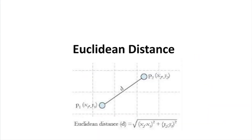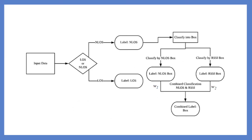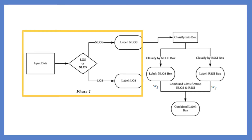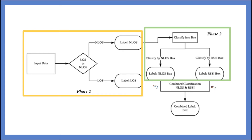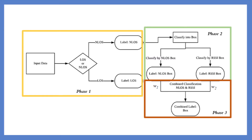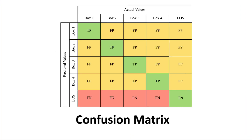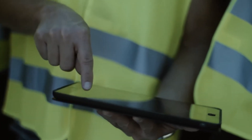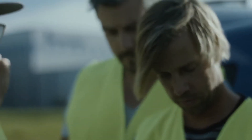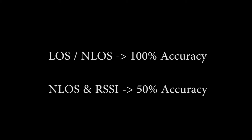By using the Euclidean distance between the test data point and the training data point, the ML classifies the prediction. The ML first classifies between LOS and NLOS transmissions. If it is an NLOS transmission, it classifies the drone into a box using NLOS and RSSI features individually and then combined. This three-phase classification allows the performance of the ML to be better assessed. Results show that the ML is able to detect the presence of a drone and predict its location in both environments.